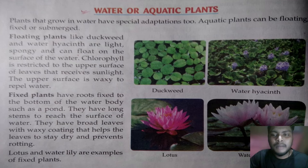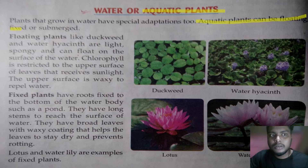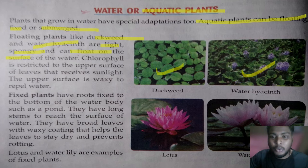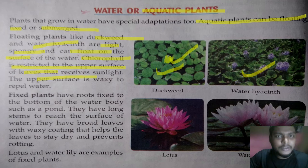Aquatic plants — plants that grow in water — have special adaptations different from land plants. Aquatic plants can be floating, fixed, or submerged. Floating plants like duckweed and water hyacinth are light and spongy and can float on the surface. Their roots are not fixed to the underground soil, and chlorophyll is restricted to the upper part of the leaves. Photosynthesis occurs on the upper surface, which is also waxy to repel water.